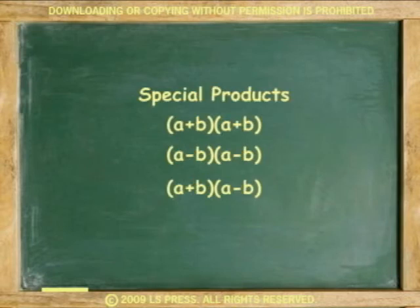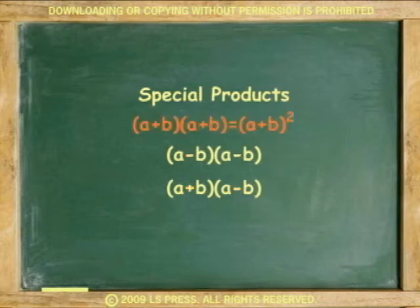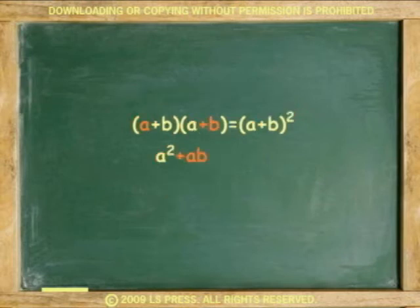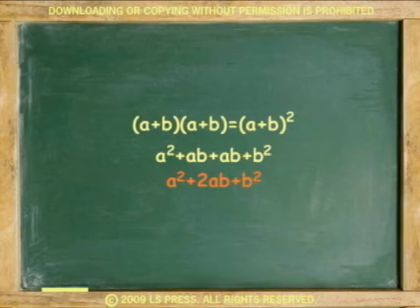Now let's look at some special products of binomials. Special binomials look similar; however, because the positive and negative signs are at different locations, their products change. The first one is (A plus B) squared. Using FOIL, the product is A squared plus AB plus AB plus B squared, which equals A squared plus 2AB plus B squared.